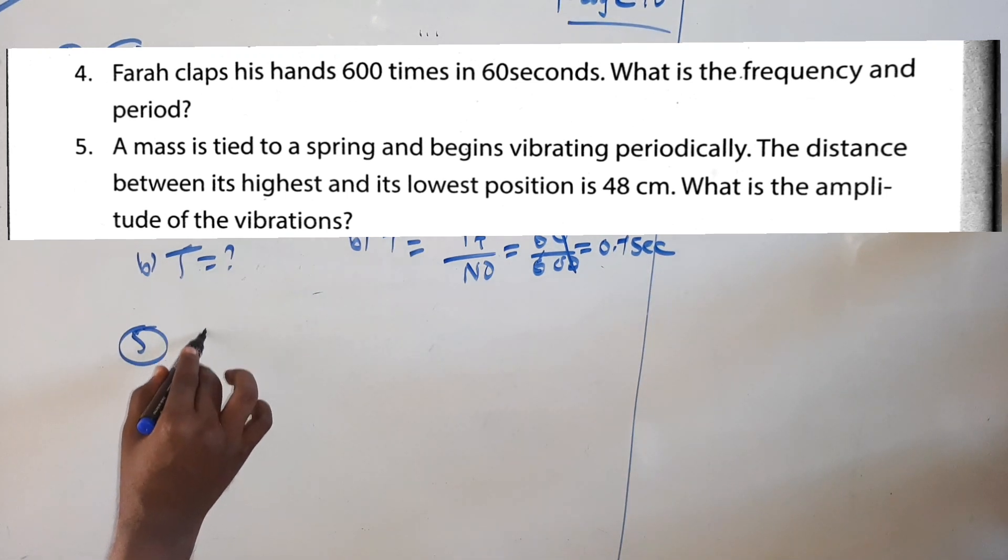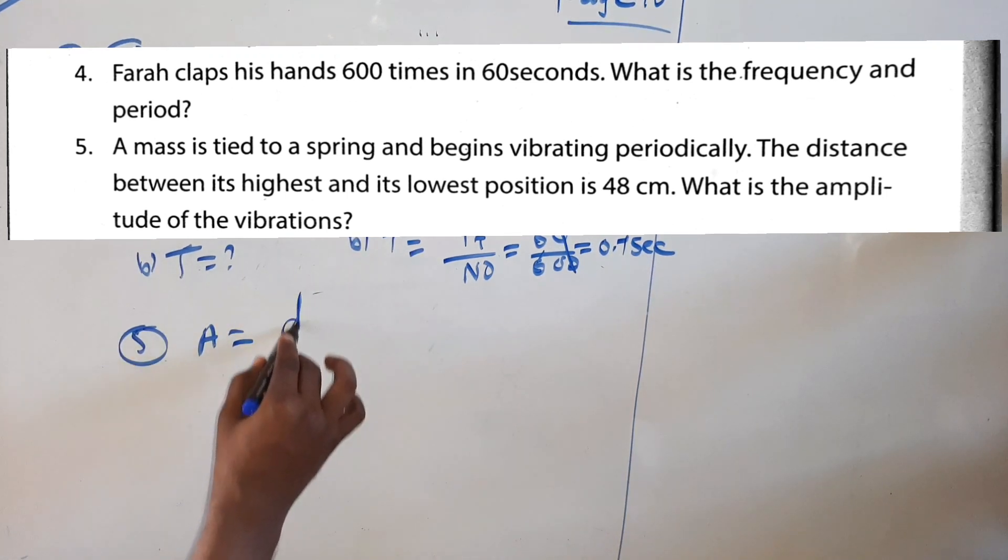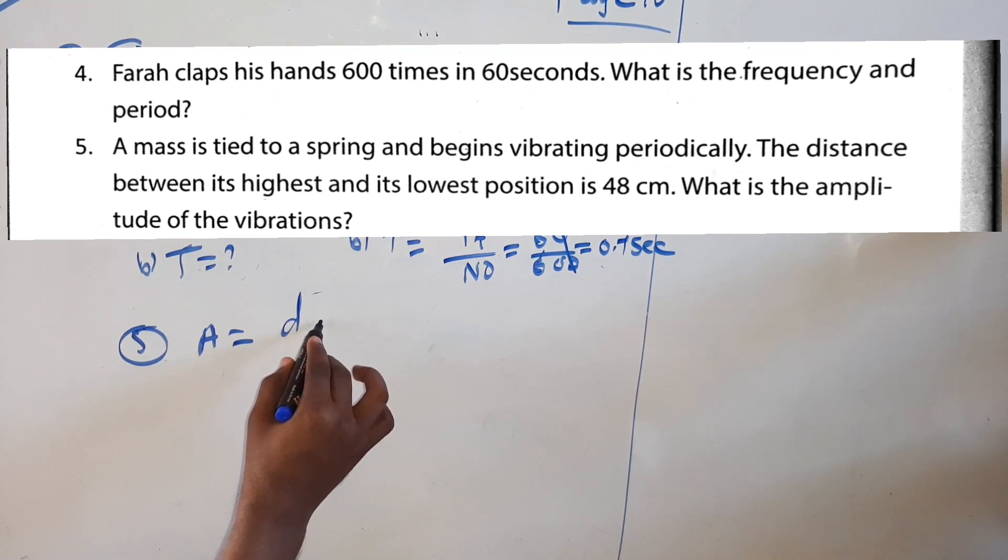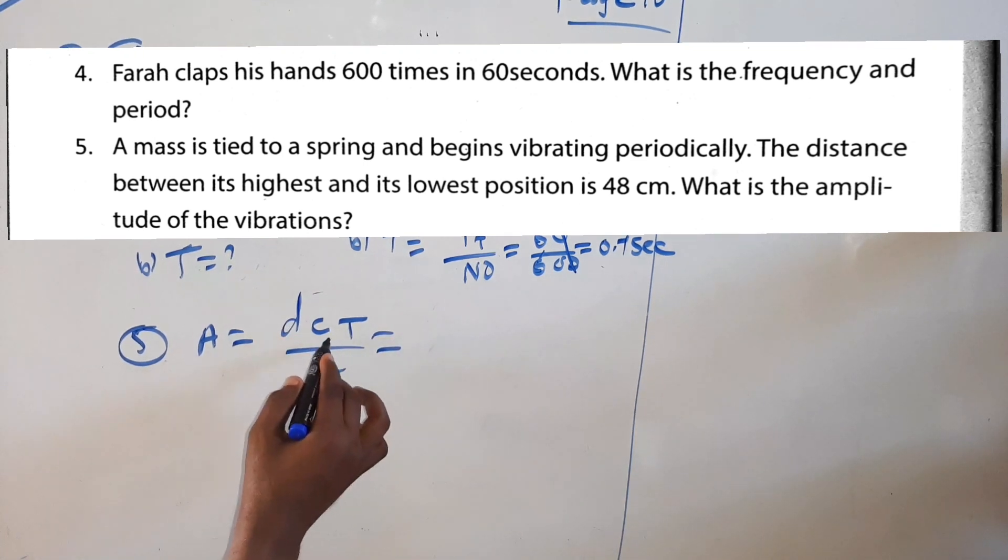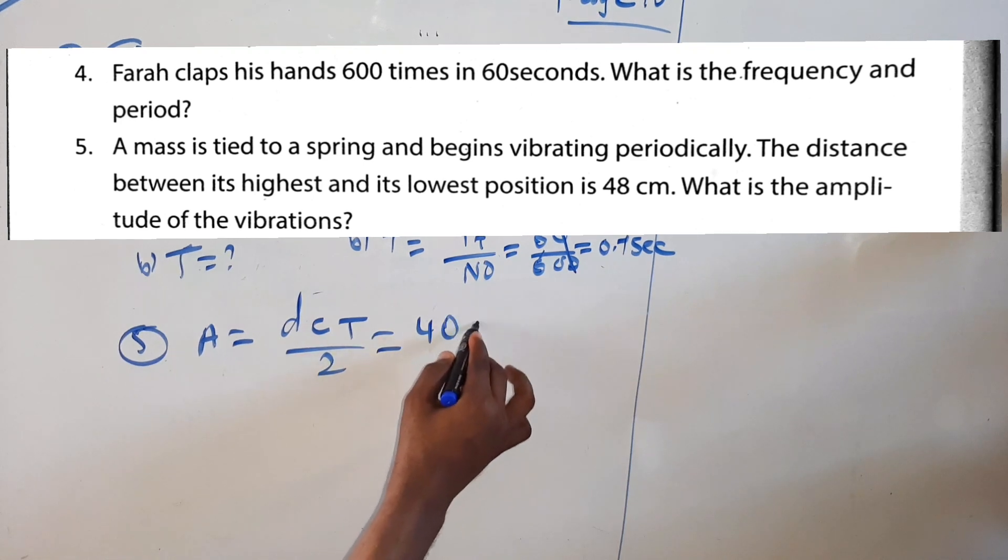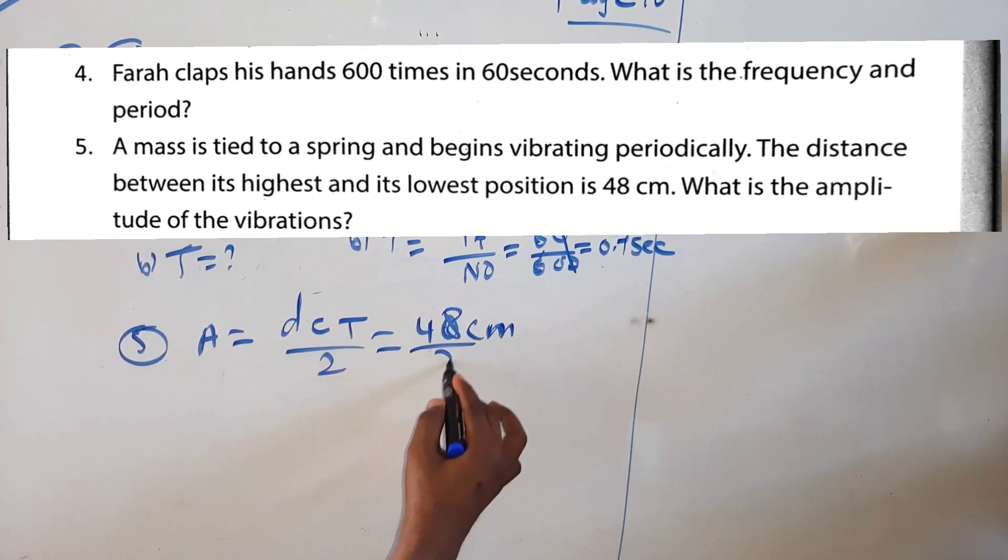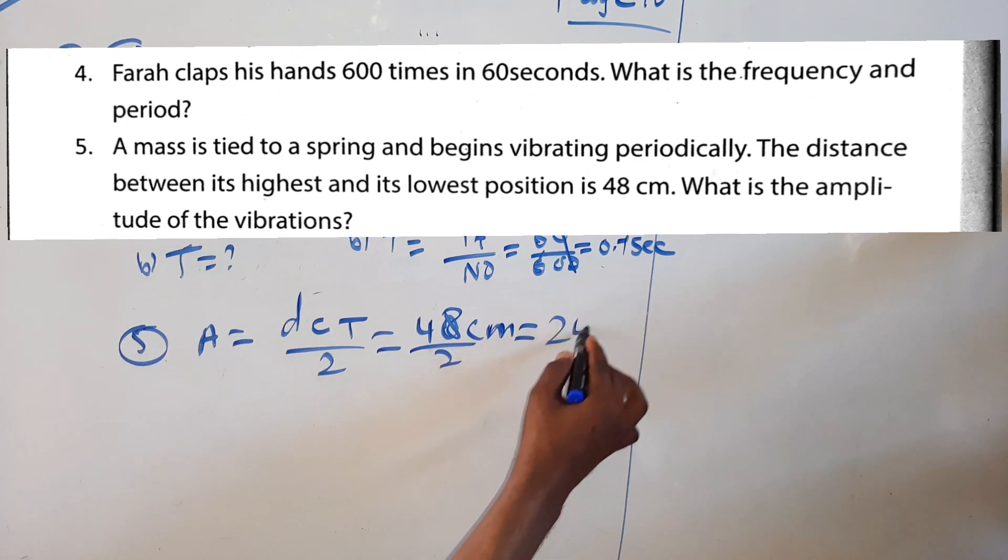The amplitude is the distance between the crest and the trough. Highest to lowest. The crest and the trough. The distance is 48 centimeters. The amplitude is 24 centimeters.